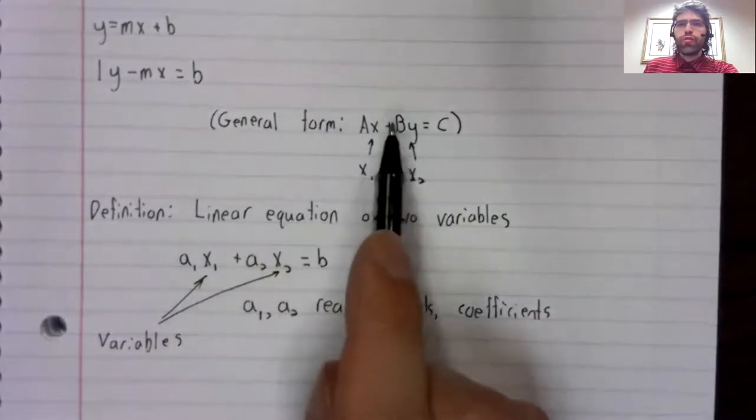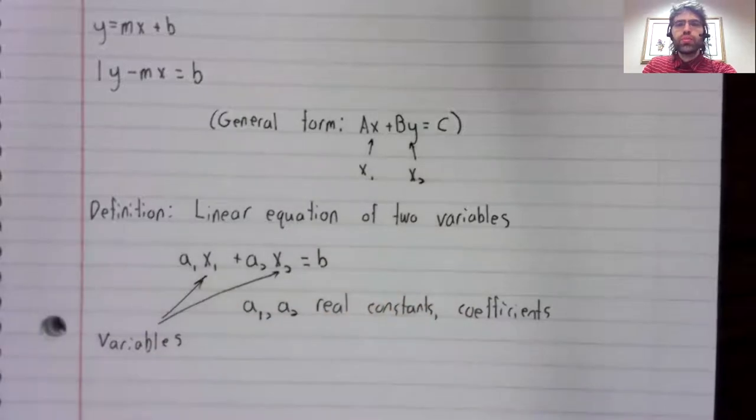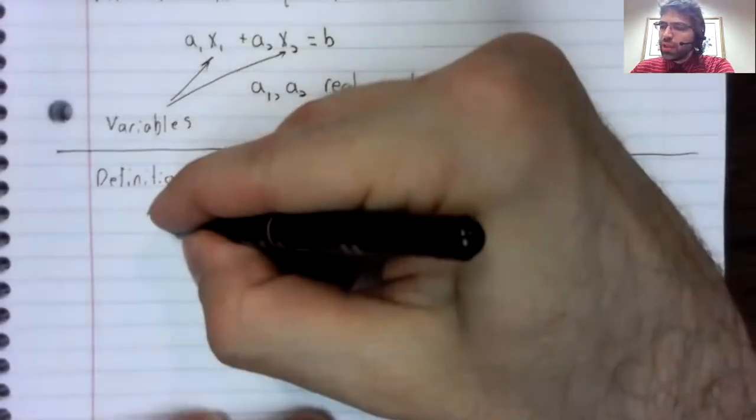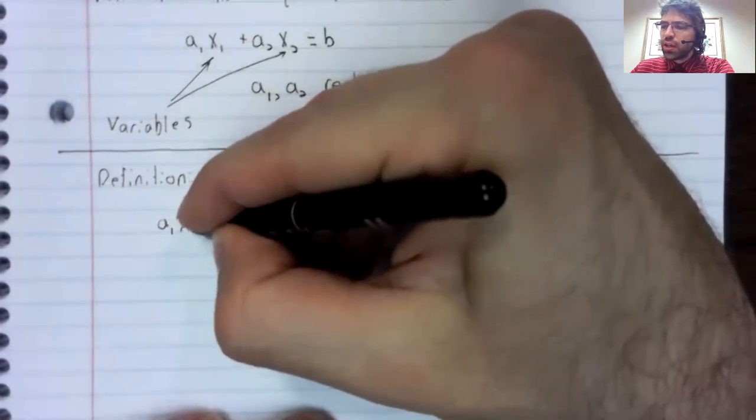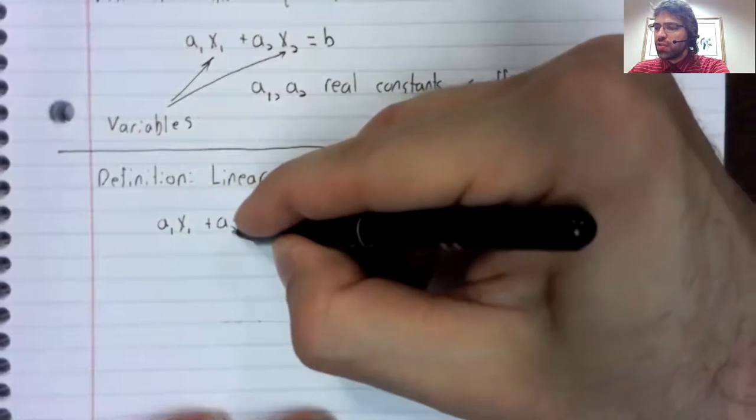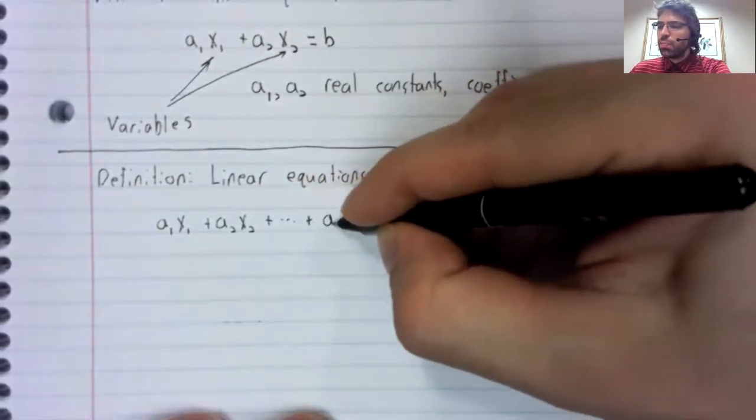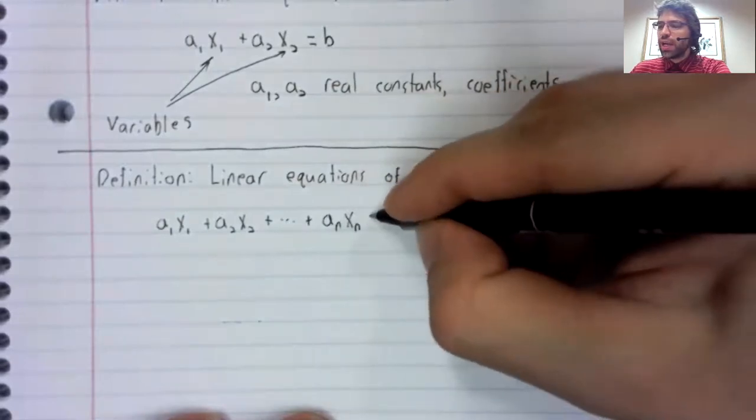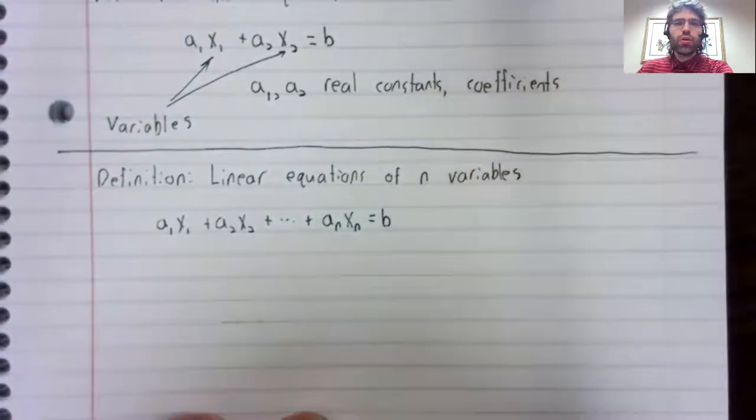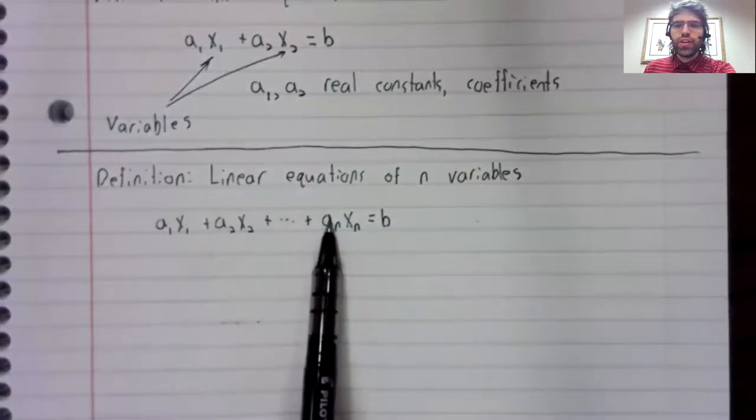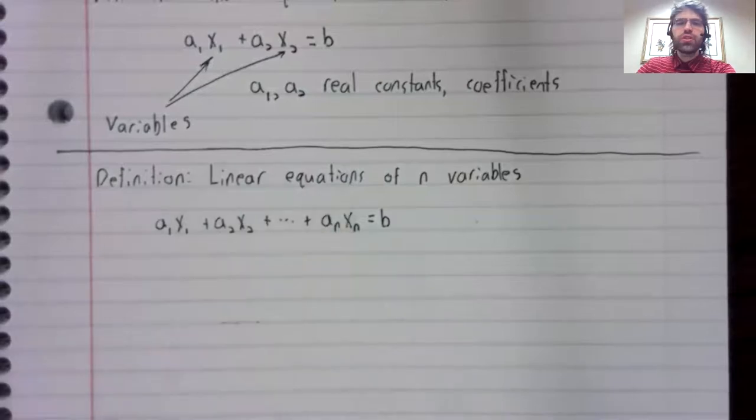The advantage of the general form is that if we want to introduce more variables, we can easily do so. A linear equation of n variables is an equation of the form a sub one times x sub one plus a sub two times x sub two plus up to a sub n x sub n equals b. These a sub i are still called coefficients and x sub i are still variables.